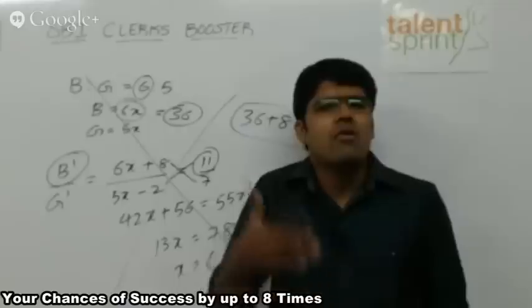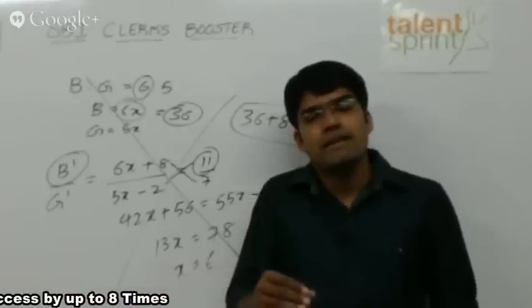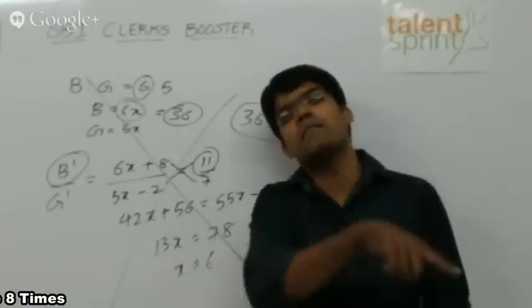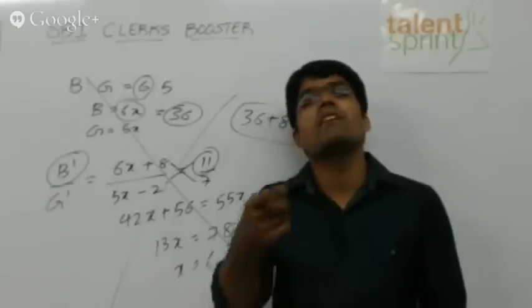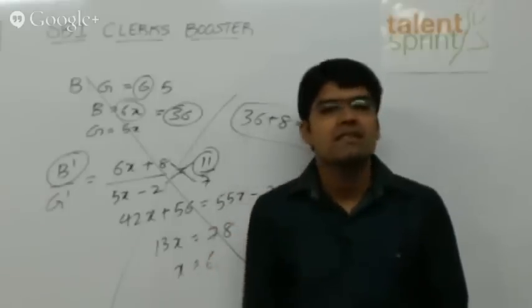Because now the number of boys is multiple of 11. And once you find that kind of an option, verify with the previous case. Minus 8 should be a multiple of 6. Both conditions are satisfied by third option.